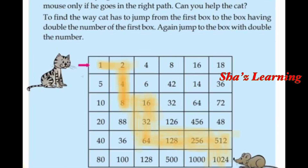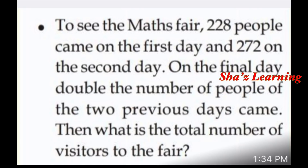That's the cat and the mouse problem done. Next problem: to see the maths fair, 228 people came on the first day. On the final day, double the number of people of the two previous days come.